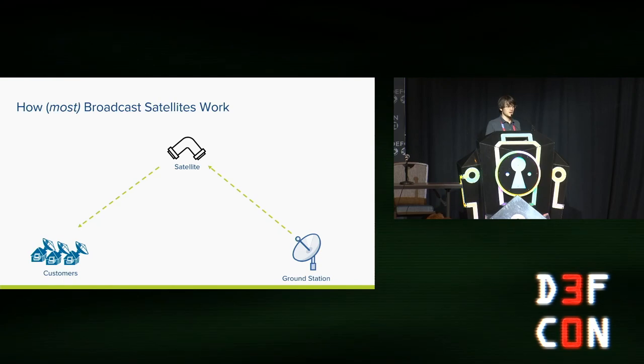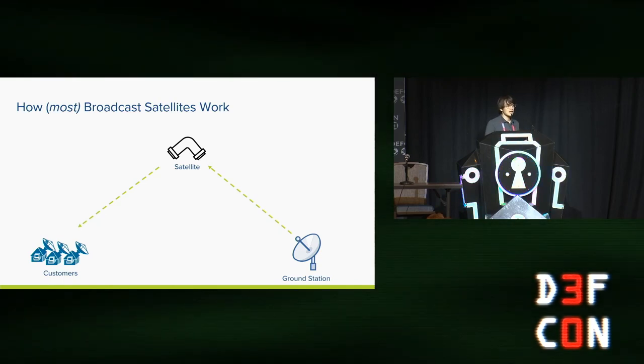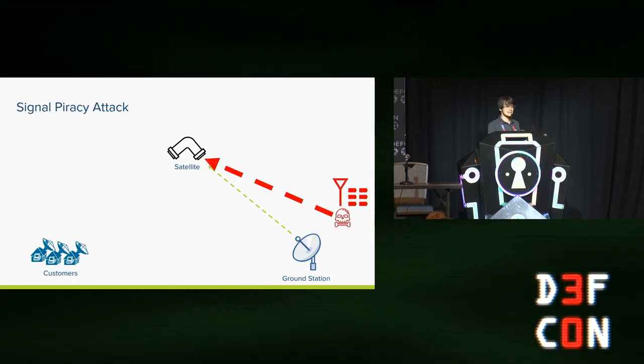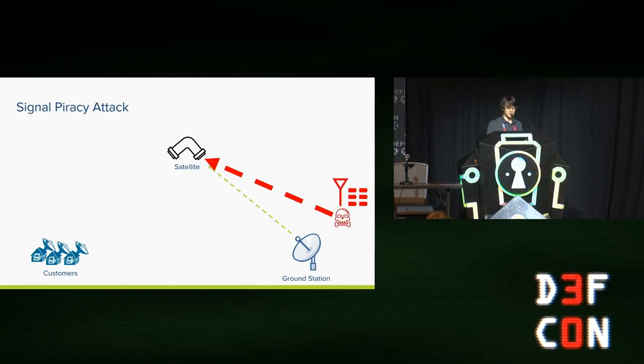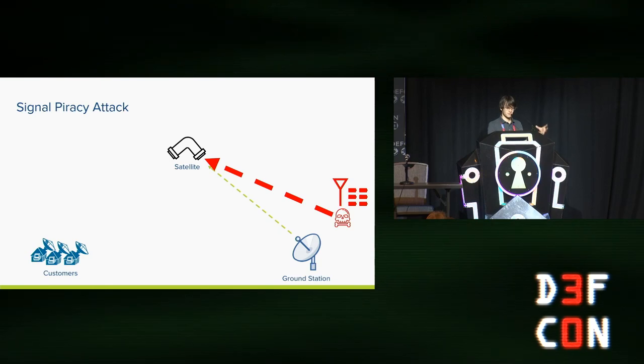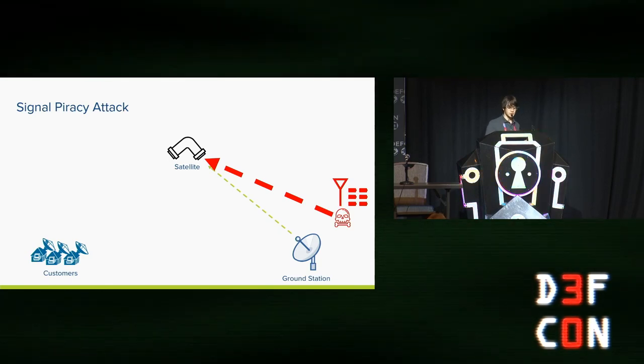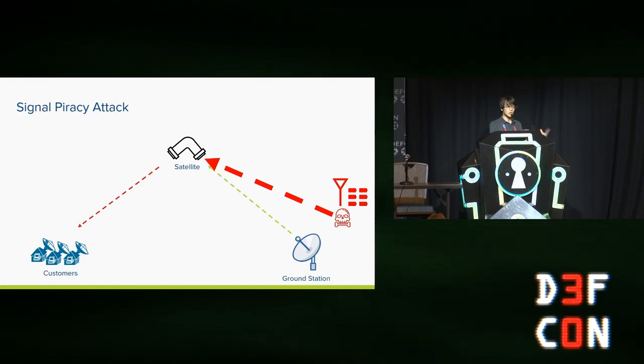Now, many of you have probably figured out where this is going, right? If you are an attacker and you can send a sufficiently strong signal into that pipe, what comes out the other side will be a combination of your very, very strong signal and the legitimate transmitter's relatively weak signal. And you will be able to take over the message and send the broadcast that you want.